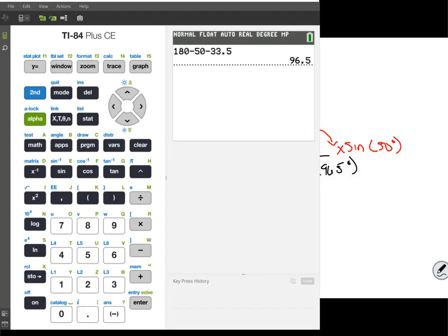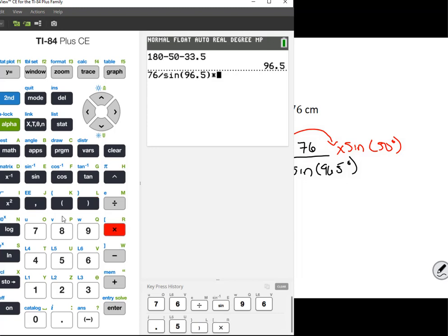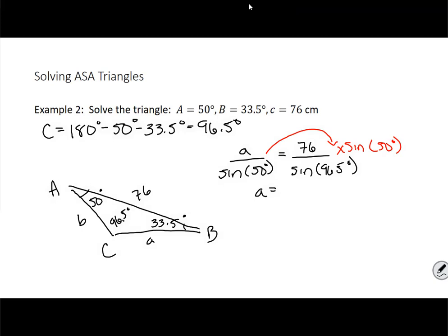Now we can use our calculators at this point. So side A equals 76 divided by sine of 96.5 and then times sine of 50. All right. And I get 58.59. So I'm going to round that to 58.6 just because one of my angles has one decimal place. So I'm going to take my clue from that. So 58.6 is side A.